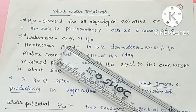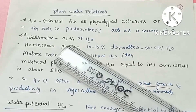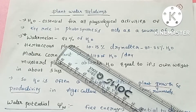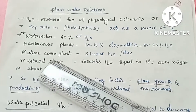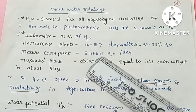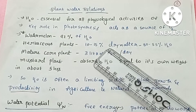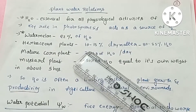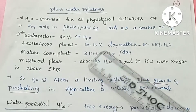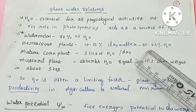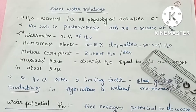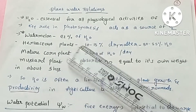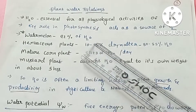Watermelon contains nearly 92% water. For herbaceous plants, if we measure dry weight, the dry weight is only 10-15%. The remaining 80-85% of the plant is occupied by water. These are very important examples and numbers.